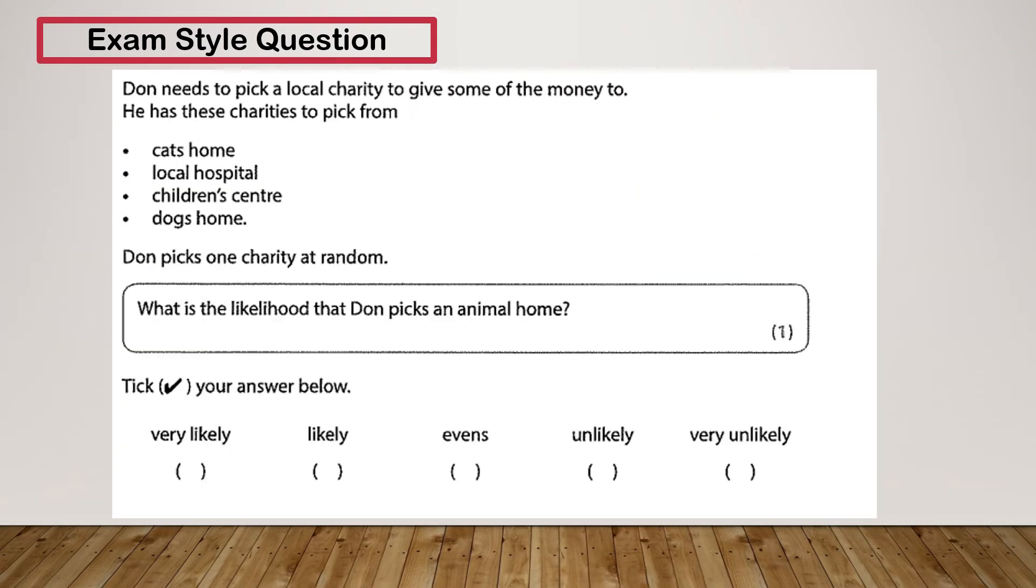Let's have a look at another example. So Don needs to pick a local charity to give some money to. He has these charities to pick from: cat's home, local hospital, children's centre, or dog's home. Don picks a charity at random. What's the likelihood that Don picks an animal home? Well, we've got a cat's home, a local hospital, a children's centre, or a dog's home. So the cat's home and the dog's home are both animal charities. So there's two animal charities, and there's a total of four charities.